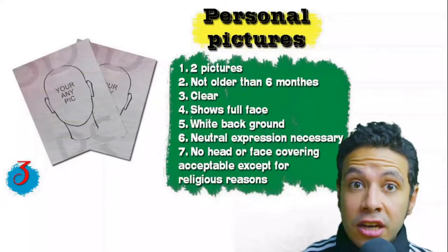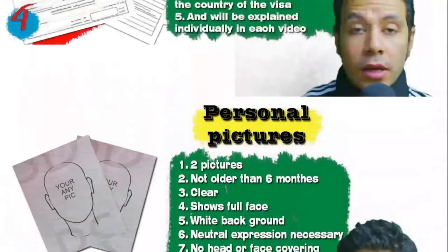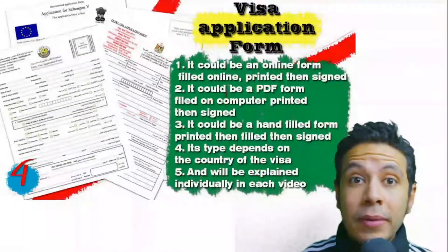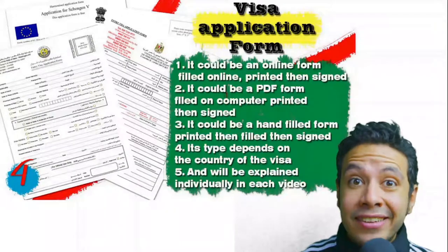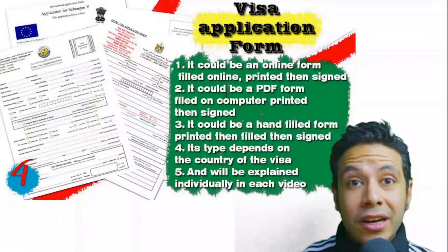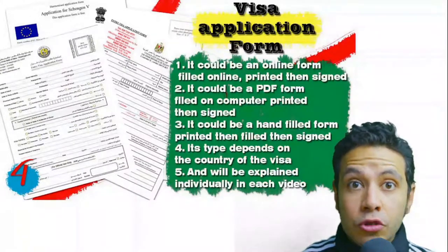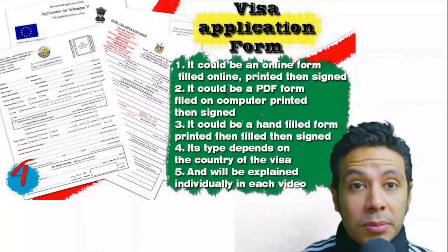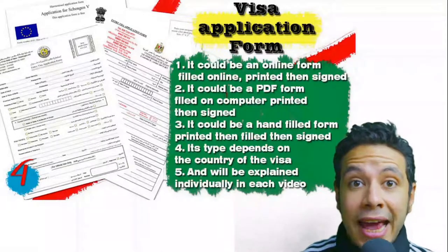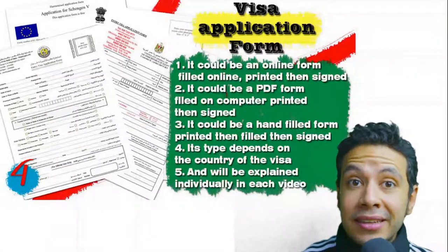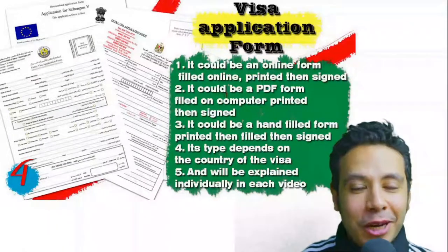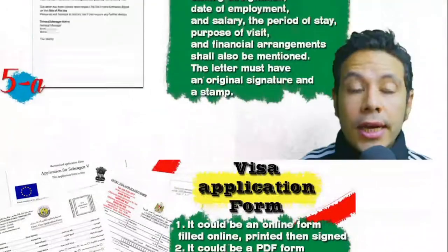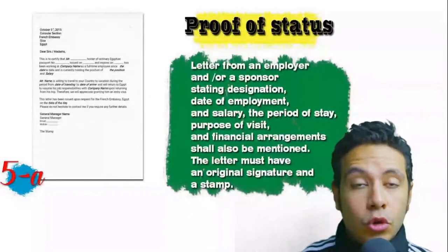For the visa application form, you generally need only one copy, but sometimes two or three are required. Visa forms differ from country to country. In general you should print and fill it manually, but many countries now offer an online platform where you can fill the form online and then print and sign it. For the application form, just fill it as demonstrated in this video.